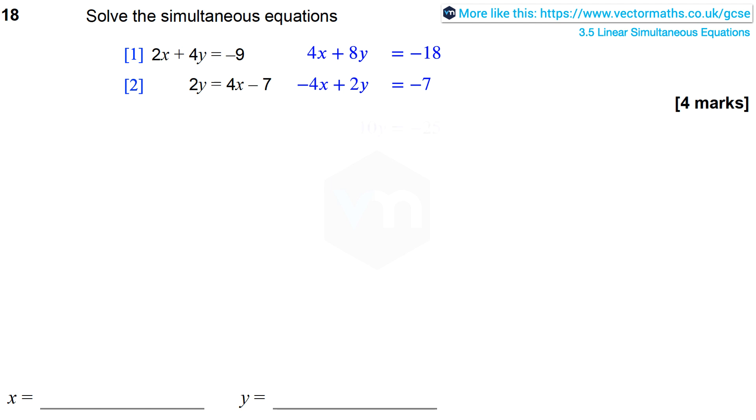Now I can add the equations together because the terms in 4x will cancel. 10y is equal to the sum of minus 18 and minus 7, which is minus 25. Therefore dividing through by 10, y equals minus 2.5.